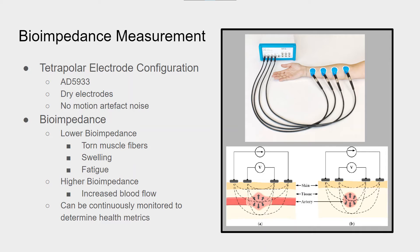Here is our methodology behind our implementation of the shinguard. We're using a tetrapolar electrode configuration for bioimpedance using the AD5933. This chip was recently developed within the past couple of years and enables us to measure high impedances that allow for the use of dry electrodes.